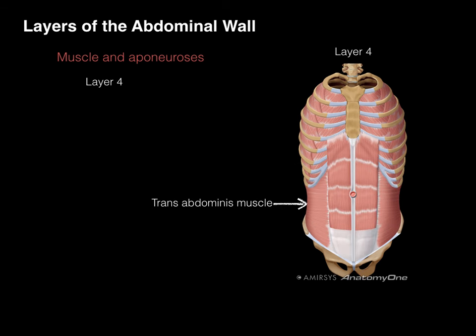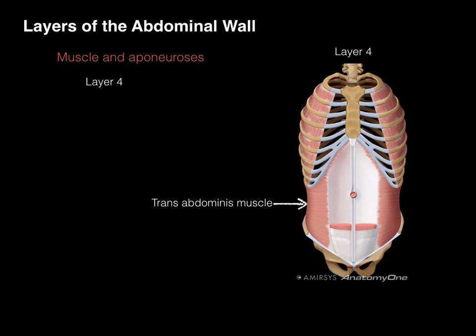Layer four is the transverse abdominis muscle — the deepest layer. To see it better, we outline and remove the rectus abdominis region. We can now see the transverse abdominis muscle, and its aponeurosis courses to the linea alba, passing behind the rectus abdominis. All of these abdominal muscles assist with lateral flexion and rotation of the vertebral column, and when they contract, they compress the abdominal contents — as when coughing, urinating, defecating, or giving birth.